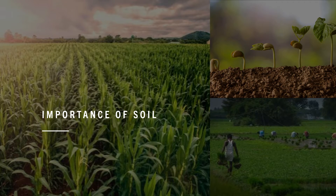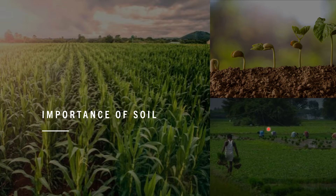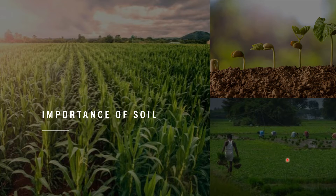Soil is very important for us. Soil is a medium for plants to grow because plants provide food for all land creatures. Thus all living beings are directly or indirectly related to soil through the food which we get. All agricultural production is generally dependent on the fertility of the soil. Food products like cereals, pulses, fruits and vegetables are all obtained indirectly from the soil. Successful farming depends largely on the soil.